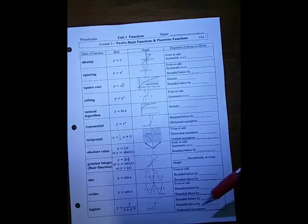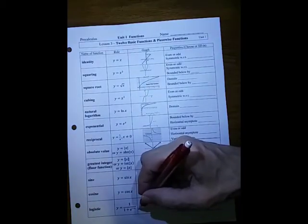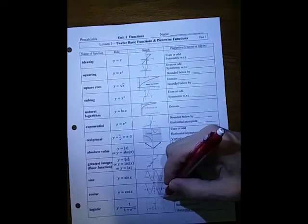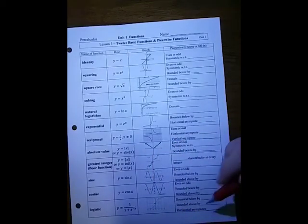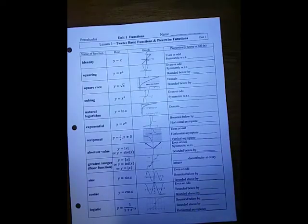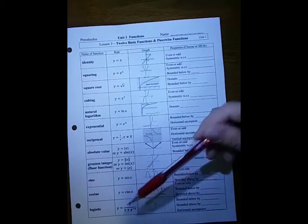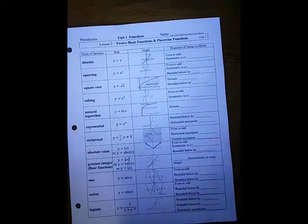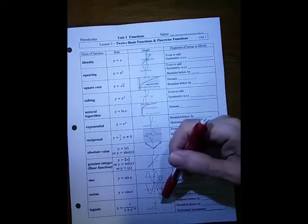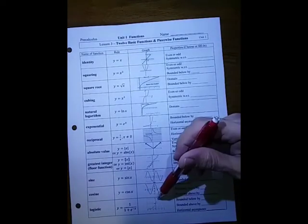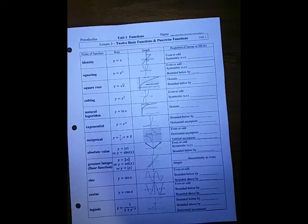The logistic function keeps getting closer and closer to the x-axis, and also approaches the horizontal line y equals 1. What's it bounded above and below by? This function actually has two horizontal asymptotes — one as x goes to minus infinity and one as x goes to plus infinity.